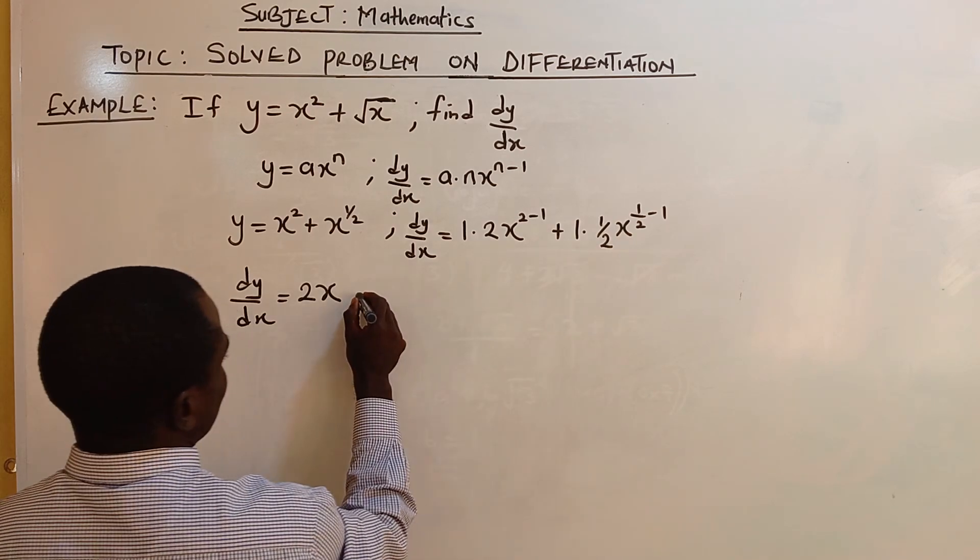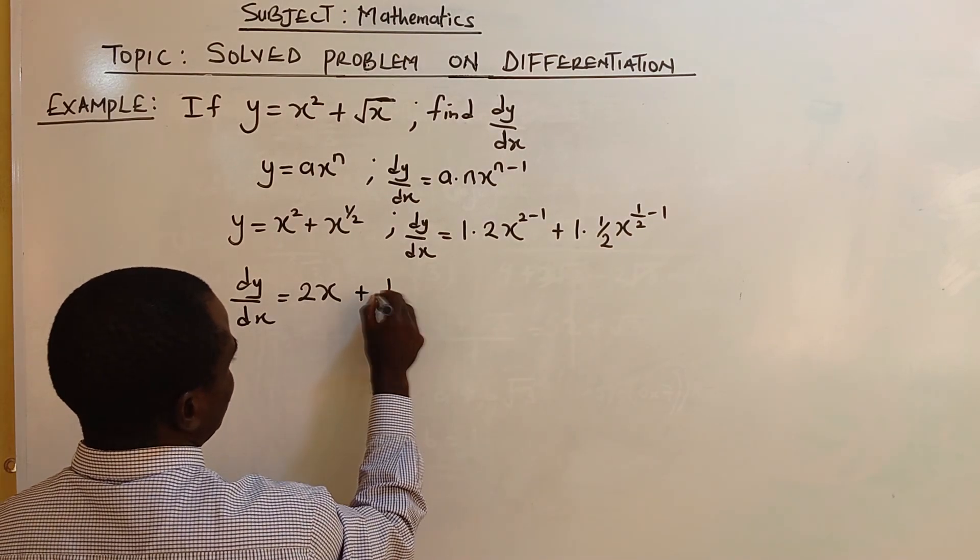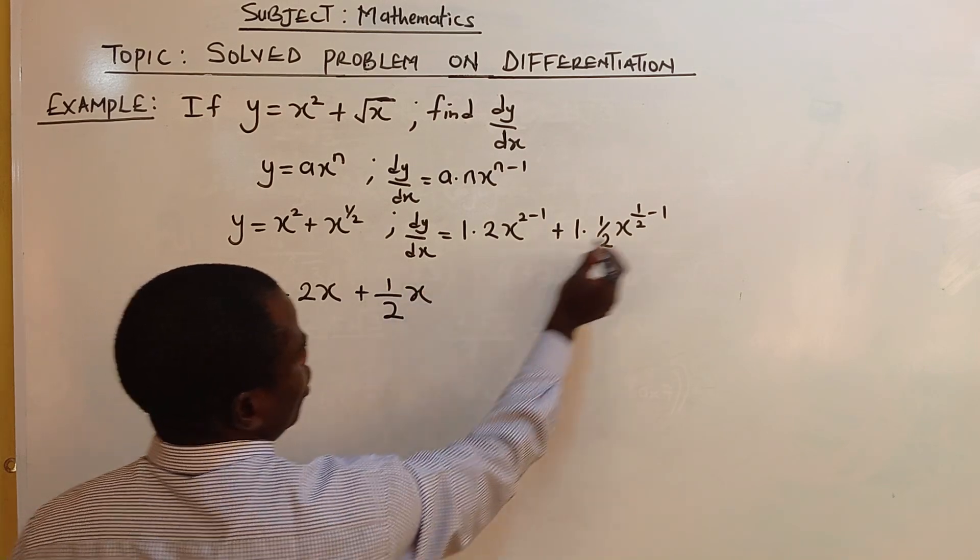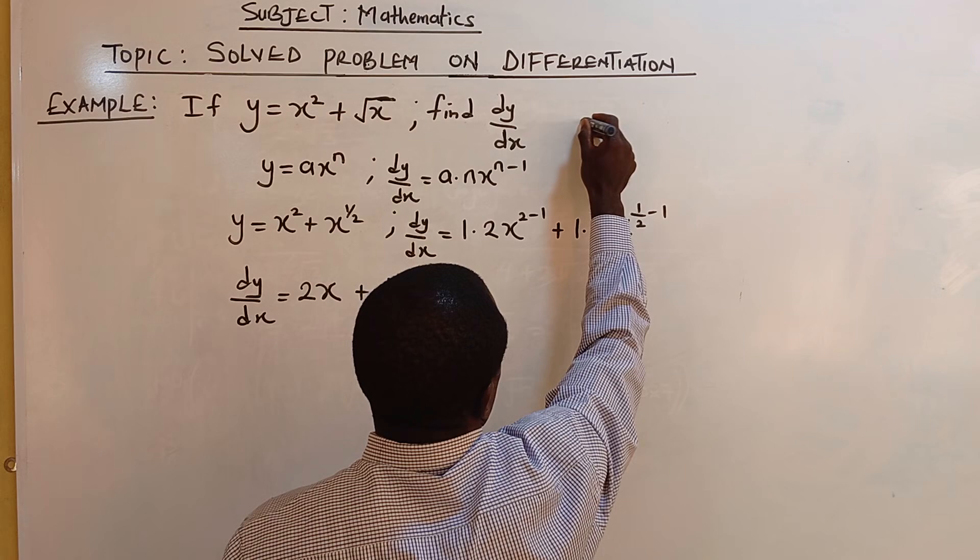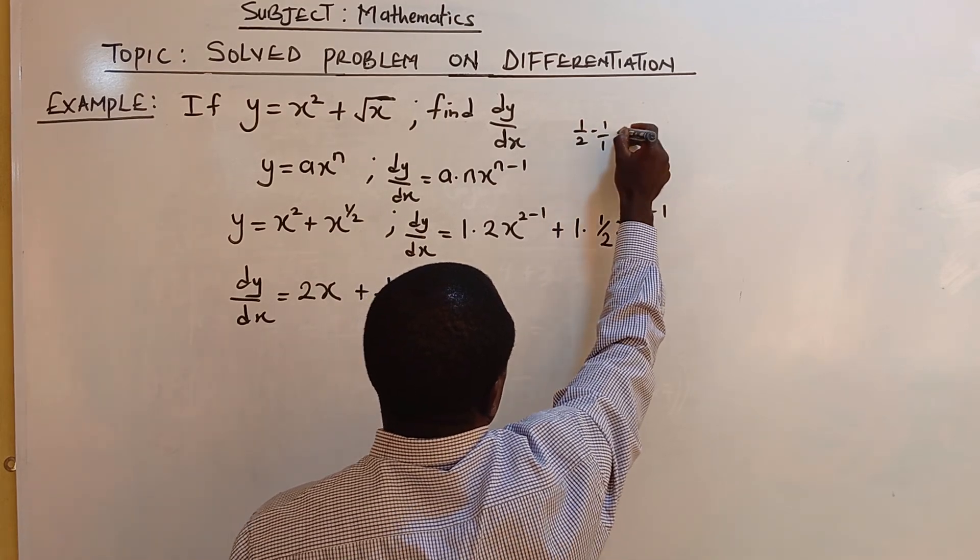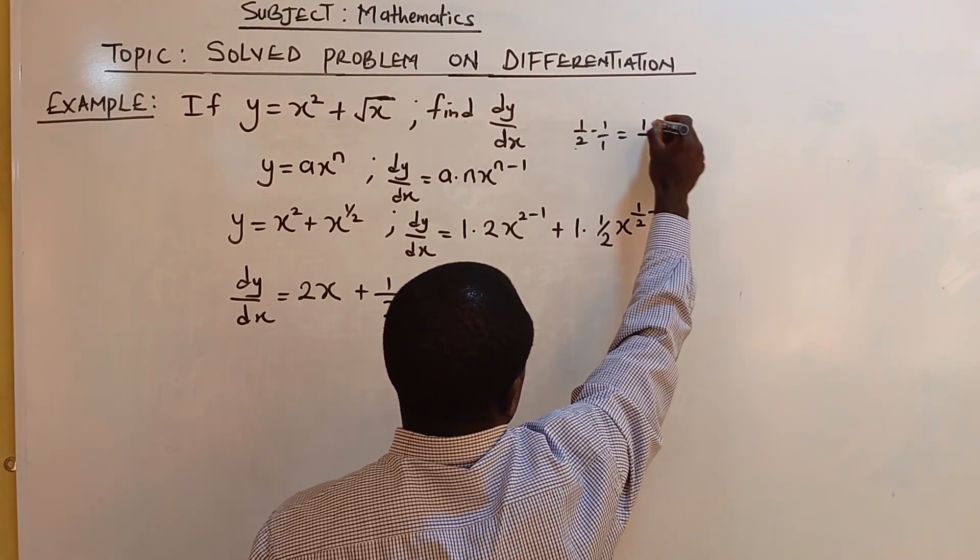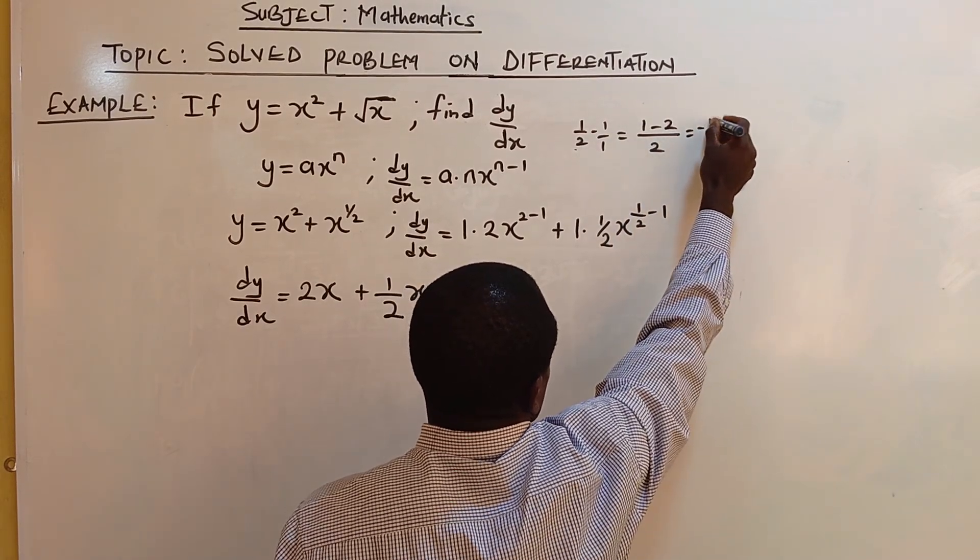1 times half, that is plus half x raised to power half. And half minus one is minus half. That's minus half.